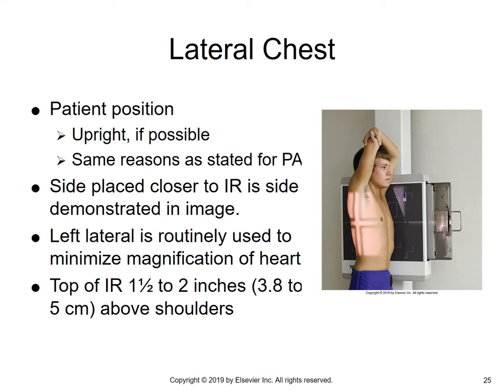You really should not have to change the level of your Bucky. If you had it correct for the PA, all you're doing is turning the patient. The top of the IR remains one and a half to two inches above the shoulders. Since the patient is in a lateral position, you have to remember to shift the lead apron around to block rays from hitting the gonads. Arms are up, patient is in a true lateral, put a hand on their back and shoulder to make sure they're in a true lateral position.